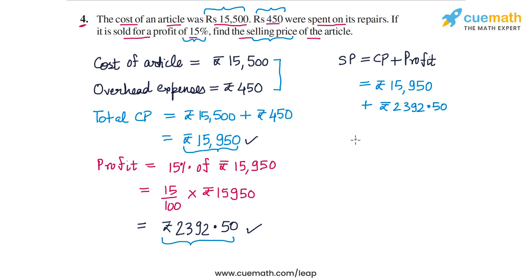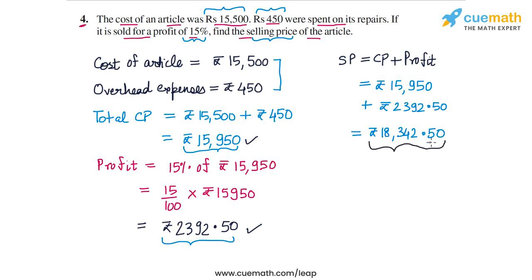Adding these two amounts, the sum comes out to be rupees 18,342 and 50 paise. So the total selling price of the article is rupees 18,342.50. That's the answer to question 4.